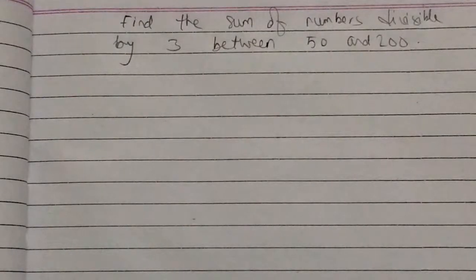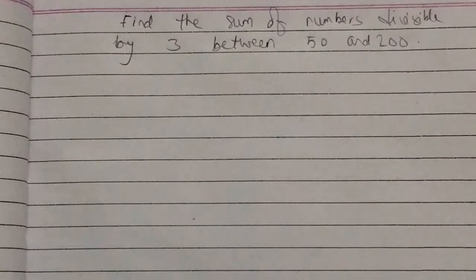Find the sum of numbers divisible by 3 between 50 and 200. We need to find numbers between 50 and 200 that are divisible by 3, then find their sum. First we need to find the first term and the last term of the sequence.